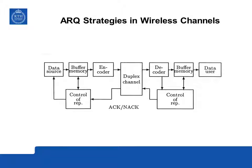If the message is correctly received, an acknowledgement is sent back over the wireless channel. The message can then be dropped from the buffer memory and the next message can be transmitted. At the same time the message is forwarded into the buffer memory of the receiver and fed to the data user.